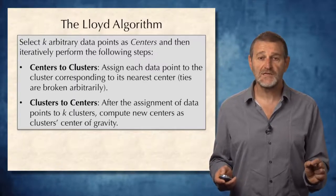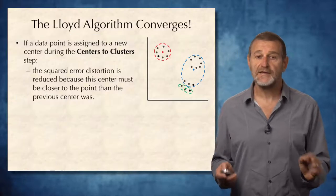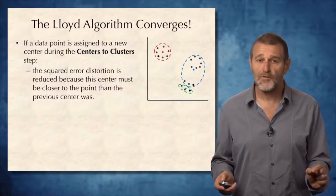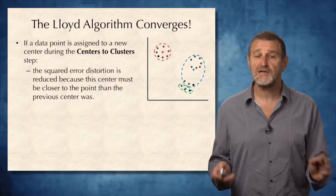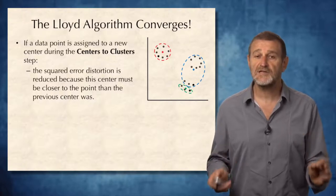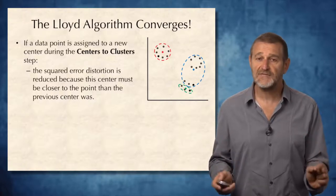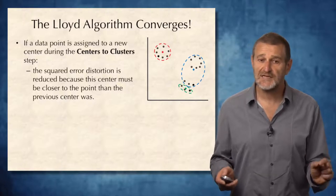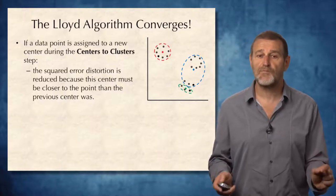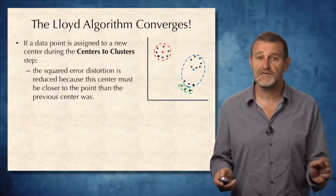Let's first prove that the Lloyd Algorithm will converge. Indeed, if a data point is assigned to a new center during the centers to clusters step, then the squared error distortion is reduced. Because the center must be closer to the point than the previous center was.